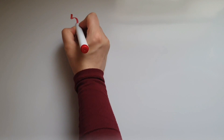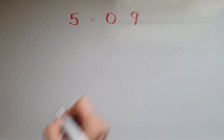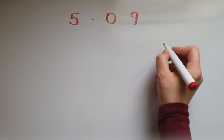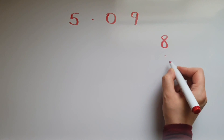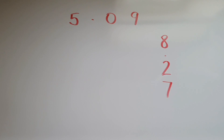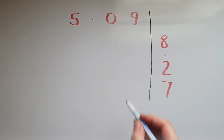Let's try this once more. Now we've got 5.09 times 8.27. It doesn't matter which way around we put them — we'll just create a grid separating the digits.